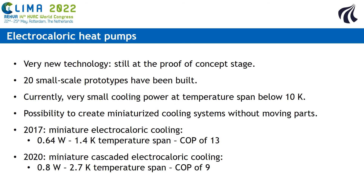The electrocaloric heat pump technology is very new and still at the stage of proof of concept. At the moment, only 20 small-scale prototypes have been built, and currently it has very low cooling power and very limited temperature span below 10 kelvin, but it has great potential to create a miniaturized cooling system without any moving parts. In 2017, a miniature electrocaloric cooling had a power of 0.64 watts with a temperature span of 1.4 kelvin and a COP of 13. In 2020, a cascaded electrocaloric cooling had a power of 0.8 watts with a temperature span of 2.7 kelvin and a COP of 9.